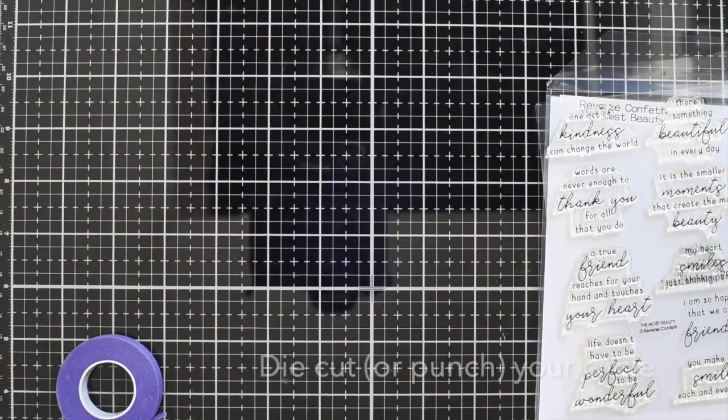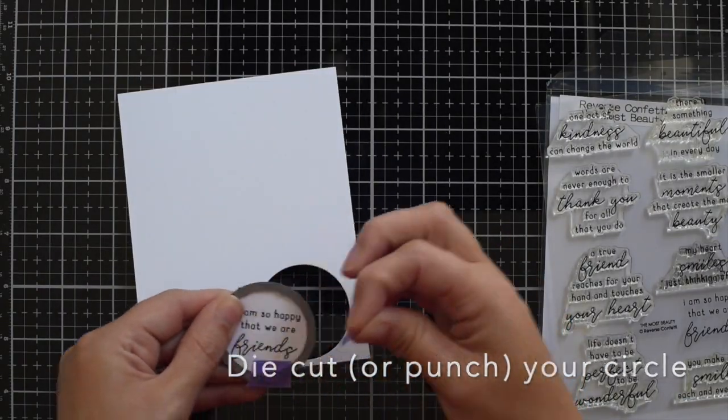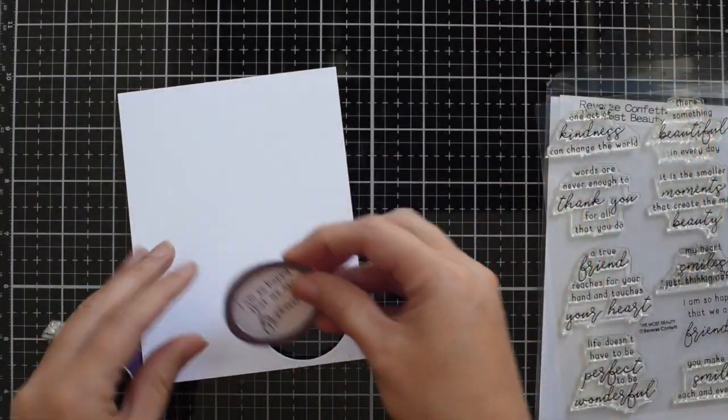Now I'm going to go ahead and die cut, but you could also use a circle punch if you have one that's big enough.